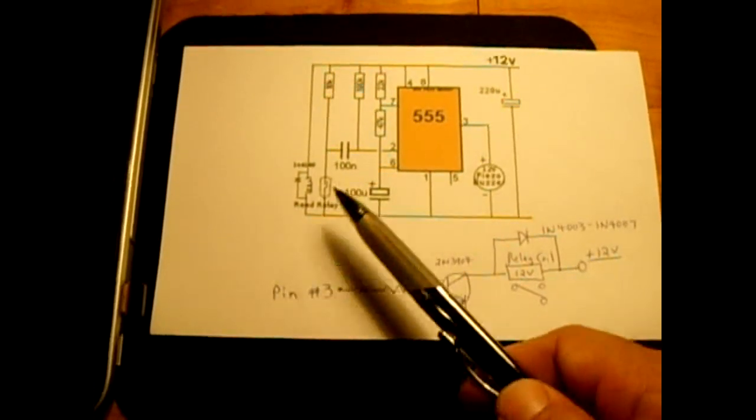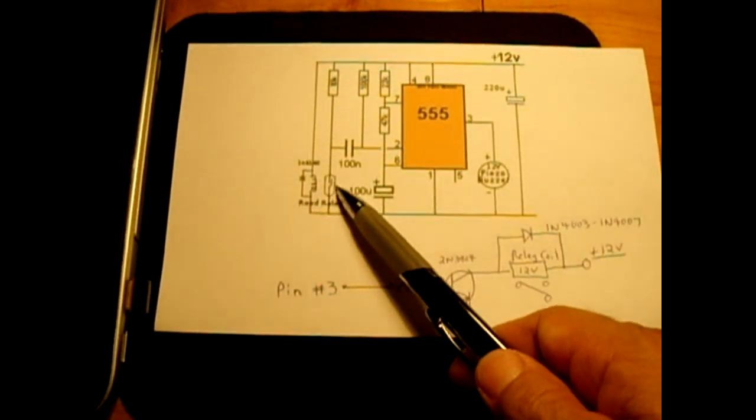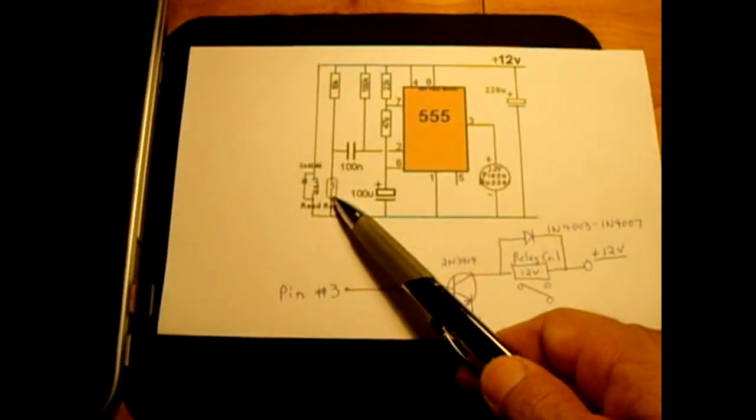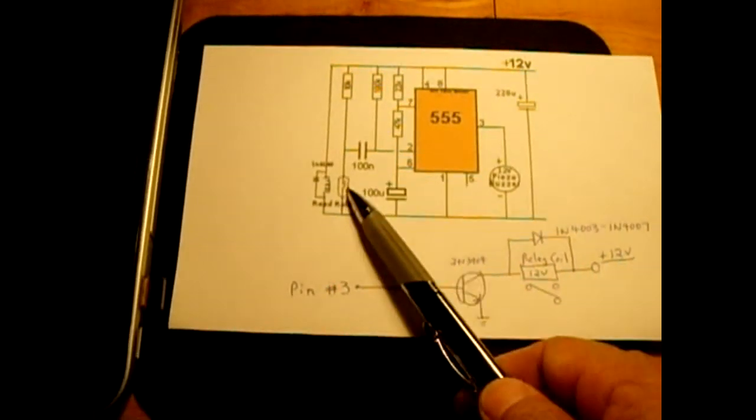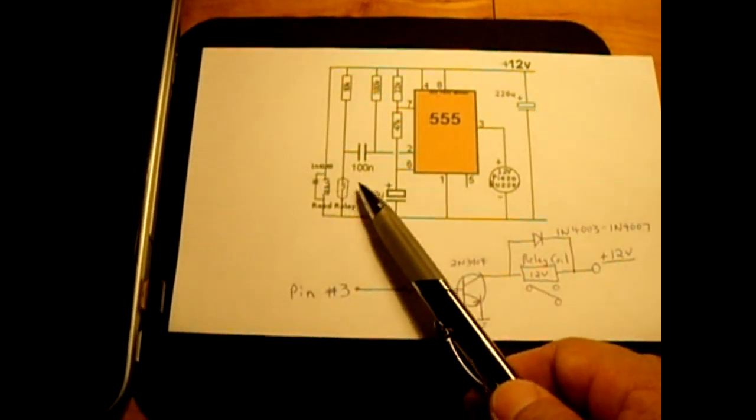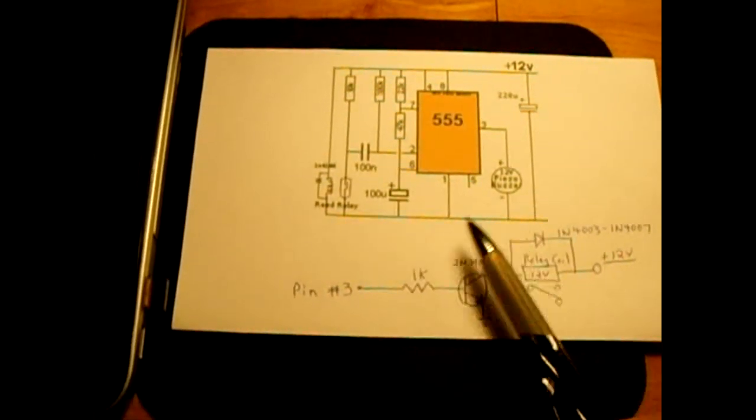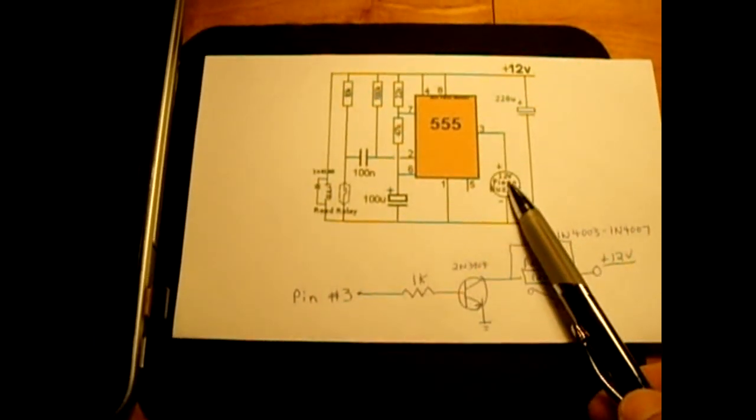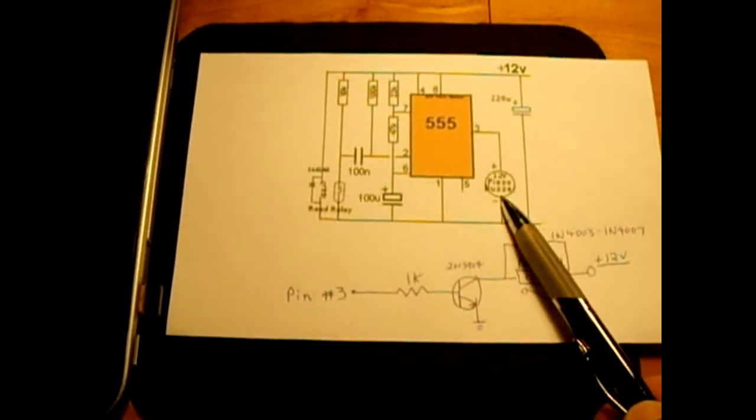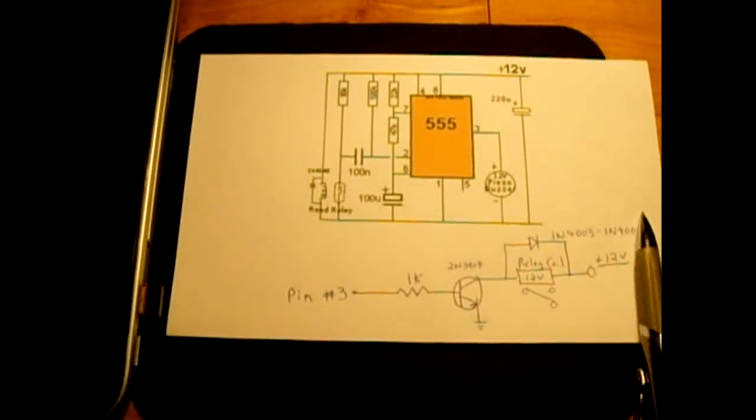Now originally there was a push-button switch right here, and according to the designer, when you push the button, the circuit is activated for a set duration. Now in this case it's five seconds. After five seconds the piezo buzzer would go off or the lights that you're controlling.